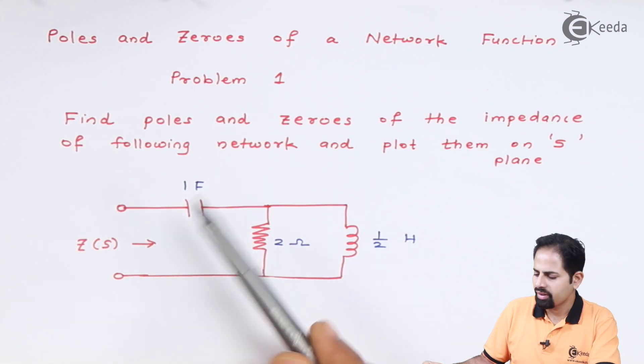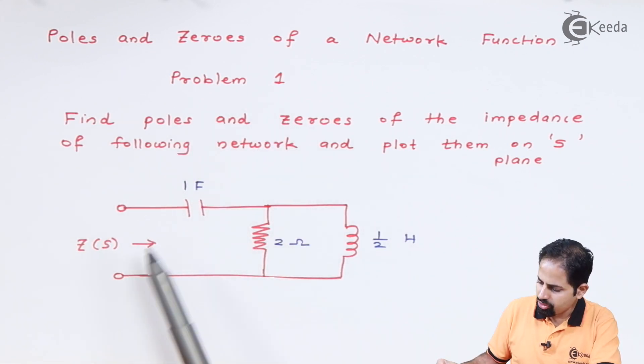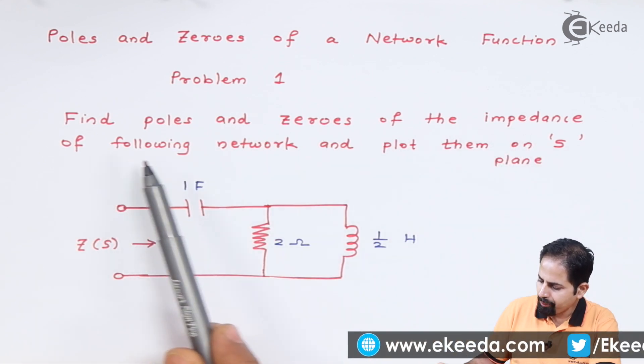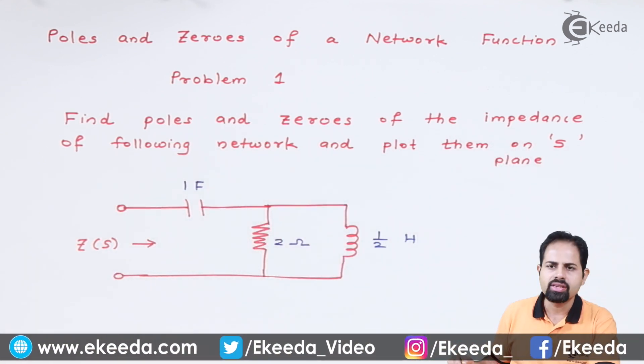Here you can see problem number one, which is asking us to find poles and zeros of the impedance of the following network. The impedance is Z(s), which is already in s-domain.